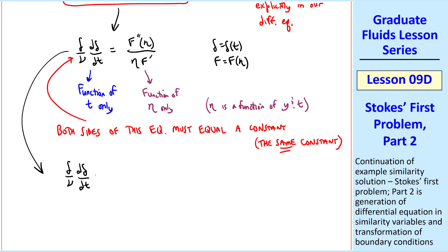δ/ν dδ/dt equals some constant, I'll call it c, and negative F''(η) over η F'(η) equals that same constant, c.